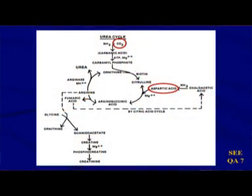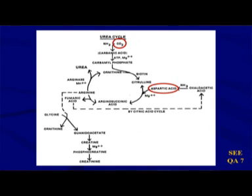Here we have the urea cycle, from QA tab 7. Ammonia on the left and carbon dioxide on the right come together and generate carbamic acid. That's what starts the elimination of ammonia — that's what starts the urea cycle. And then we get carbamyl phosphate.